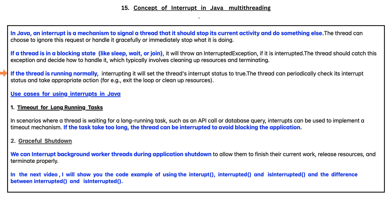If the thread is running normally, interrupting it will set the thread's interrupt status to true. The thread can periodically check its interrupt status and take appropriate action — for example, exit the loop or clean up the resources.